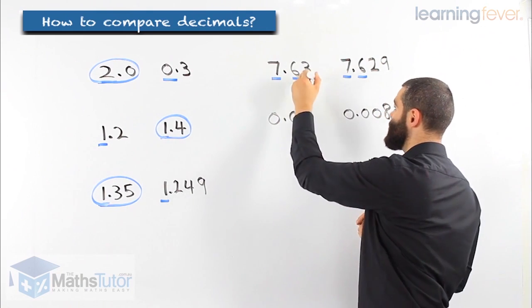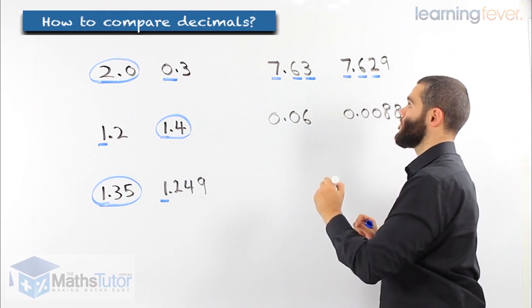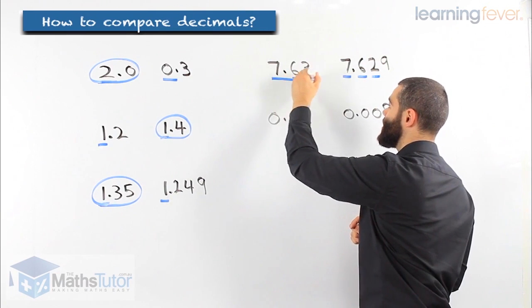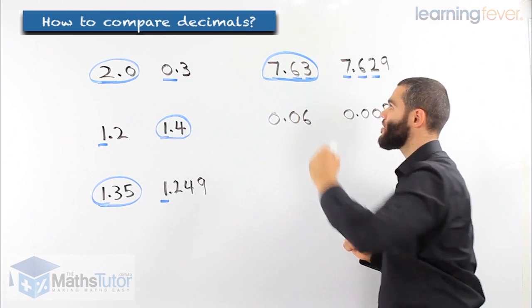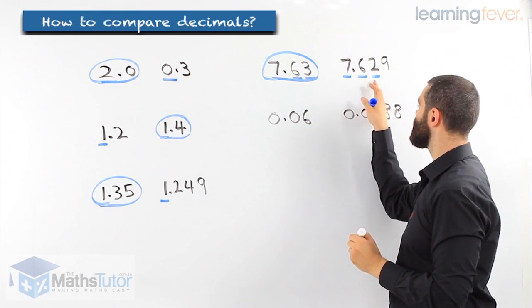Then we look at the hundred. We have a 3 here. We have a 2 here. Therefore, the 3 is bigger than the 2. 7.63 is larger than 7.629.